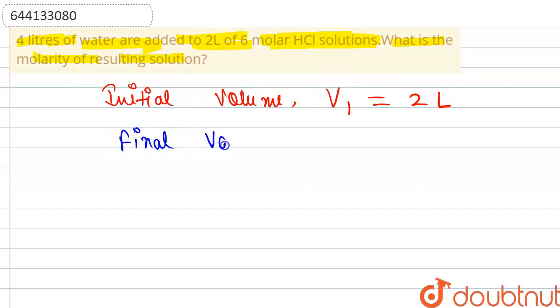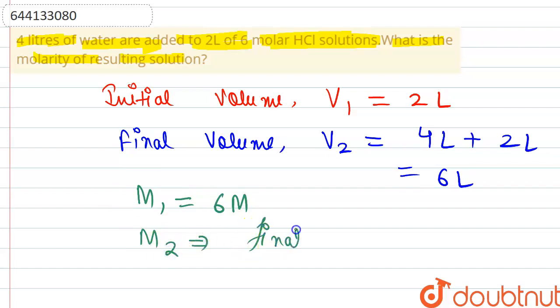Then we will be writing final volume V2, that is equal to four liters plus two liters, would be six liters. Right, now initial molarity M1 is six molar, and let's say the final molarity is M2. M2 is final molarity.